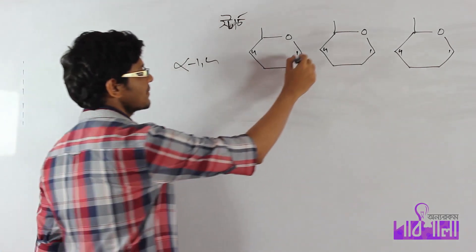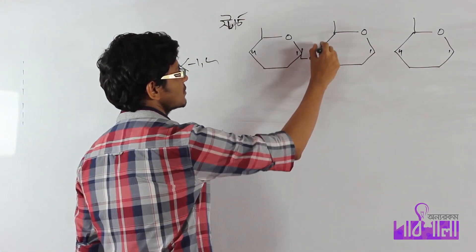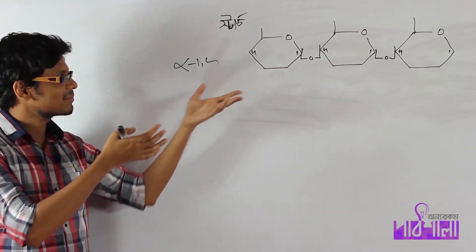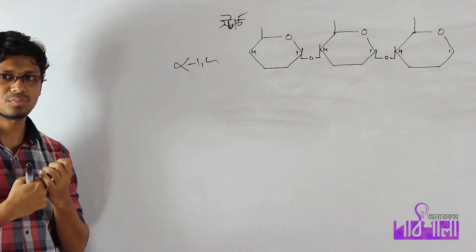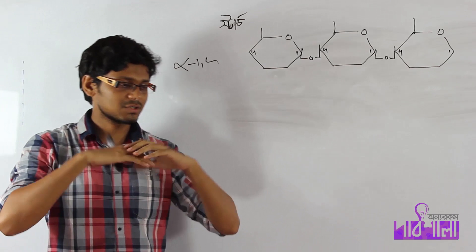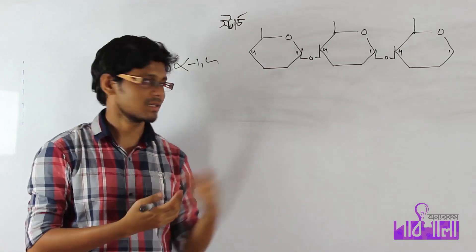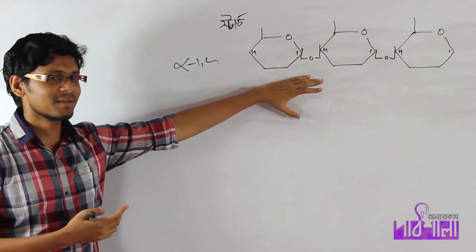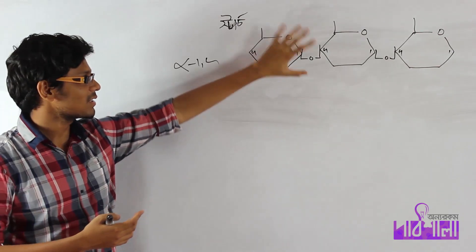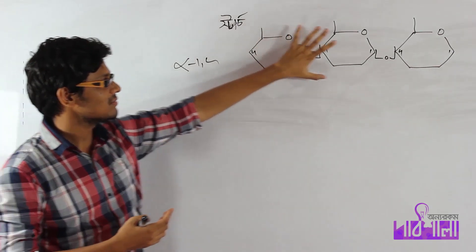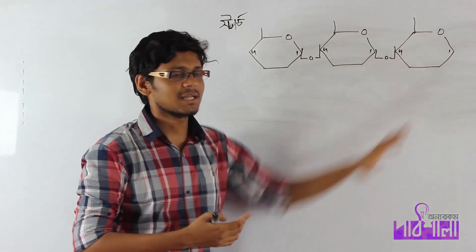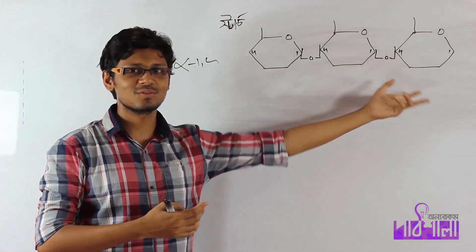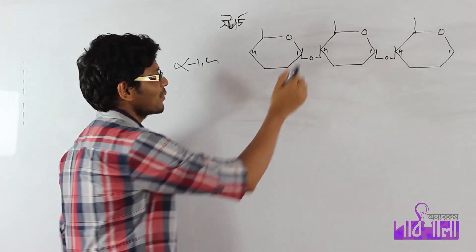Amylose is alpha-1,4. A common mistake is thinking starch and amylose are the same thing — they are not. If we talk about polysaccharide, starch contains amylose as a component. This is the trisaccharide level of glucose.